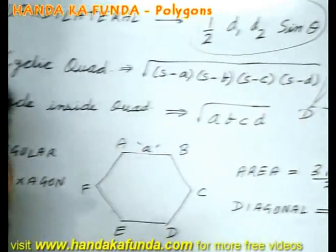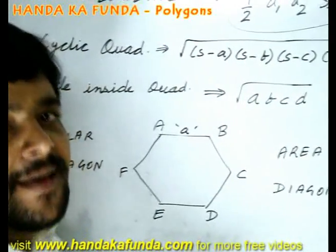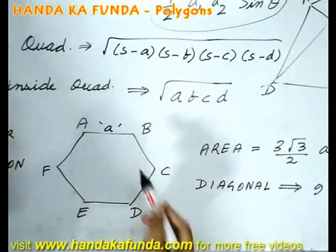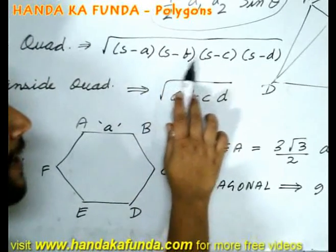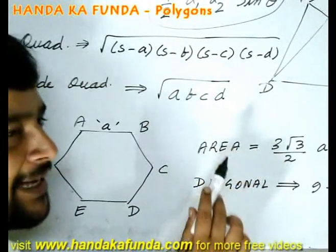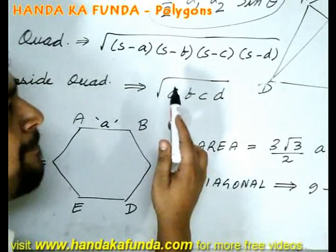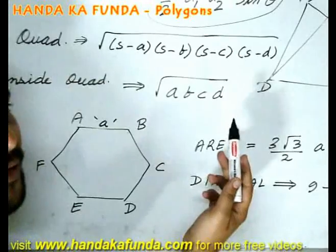Special case would be a cyclic quadrilateral. A cyclic quadrilateral is such that all its four vertices lie on the circumference of the circle. In such a case, its area is given by square root of s minus a, s minus b, s minus c, s minus d, where s is nothing else but the semi-perimeter, which is a plus b plus c plus d by 2. And a, b, c, d are the sides of the quadrilateral.